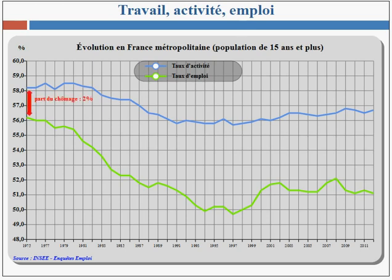En 1975, l'écart entre le taux d'activité et le taux d'emploi est de 2%. Ceci représente la part du chômage dans la population de 15 ans et plus, à ne pas confondre évidemment avec le taux de chômage que nous verrons dans un module suivant. En 2012, cette part du chômage dans la population de 15 ans et plus est passée à 5,6%. Il y a donc eu, sur l'ensemble de la période, une très nette augmentation de cette part, confirmant ainsi le graphique précédent.